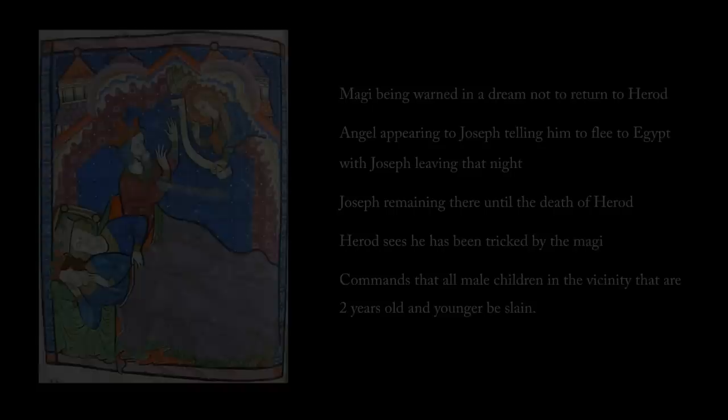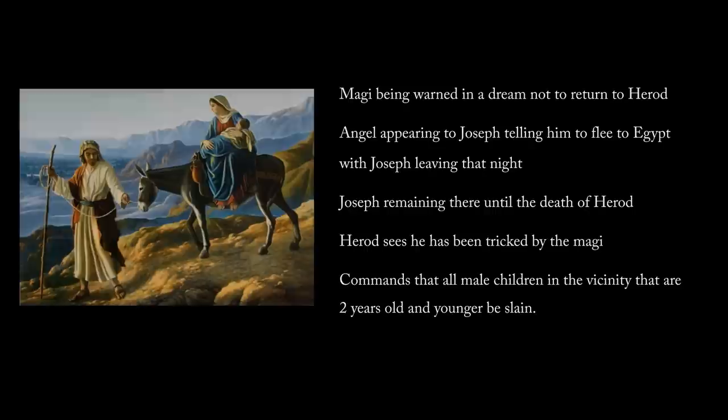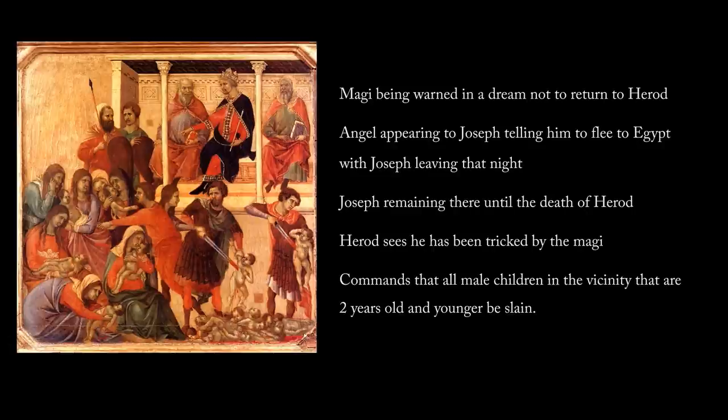The passage continues with the Magi being warned in a dream not to return to Herod, an angel appearing telling Joseph to flee to Egypt, with Joseph leaving that very night and remaining there until the death of Herod — which fulfilled the prophecy. Herod sees he has been tricked by the Magi and commands that all male children in the vicinity two years old and younger be slain, 'according to the time which he had determined from the Magi.' This too was to fulfill prophecy.